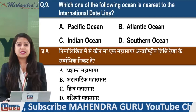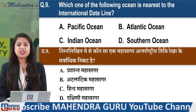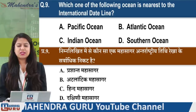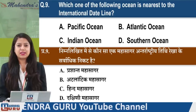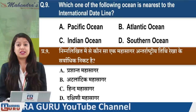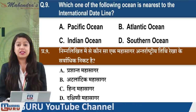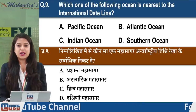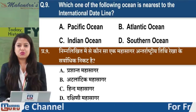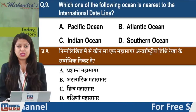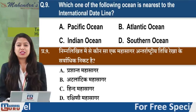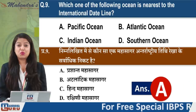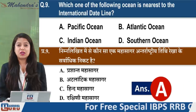Next question: Which one of the following oceans is nearest to the International Date Line? Options: Pacific Ocean, Atlantic Ocean, Indian Ocean, or Southern Ocean. The ocean nearest to the International Date Line is the Pacific Ocean - the Prashant Mahasagar.